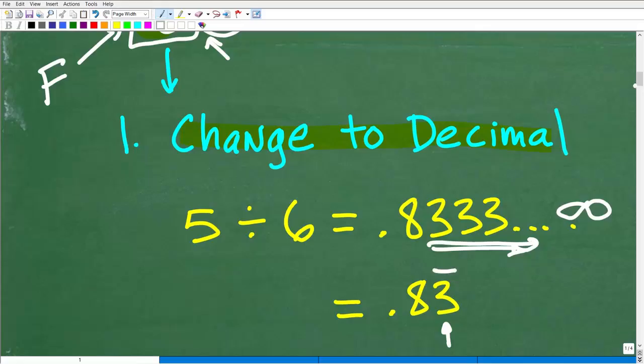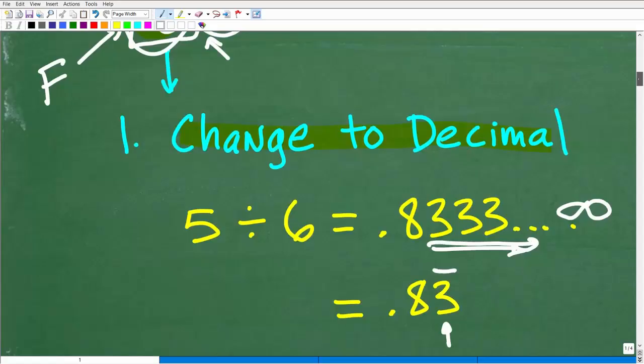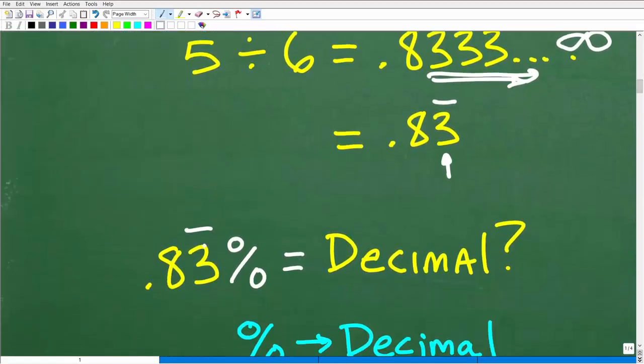That was step one. We changed this fraction into a decimal. Now our equivalent problem is: instead of 5/6%, now we have 0.83 repeating percent. That is now our new problem. Just because we did this doesn't mean we can drop our percent. We have to control the process here.